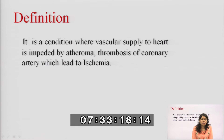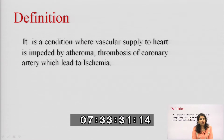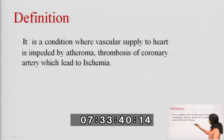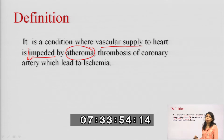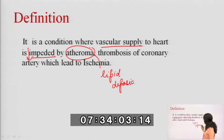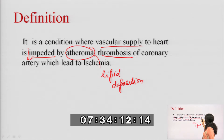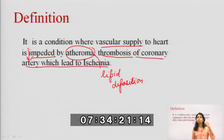For the definition, we are discussing ischemic heart disease. First we need to understand what ischemia is. Ischemia is a condition where vascular supply to the heart is impeded by atheroma or thrombosis of the coronary artery. Atheroma is lipid deposition, and the coronary artery is the artery which supplies blood to the heart itself.